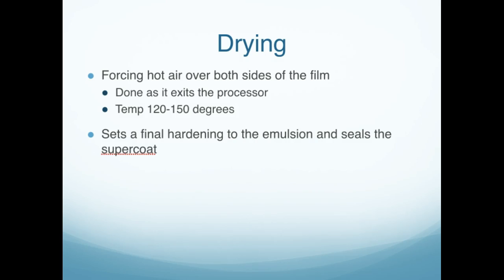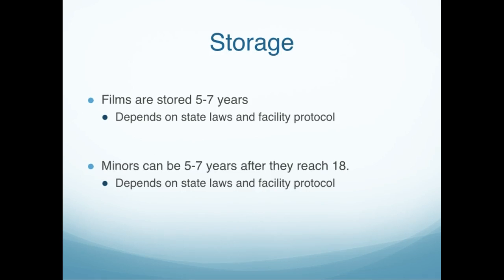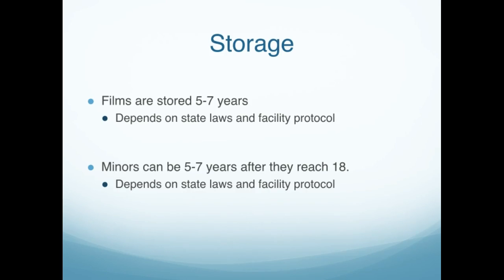The drying phase involves forcing hot air over both sides of the film as it exits the processor. The temperature is 120 to 150 degrees to dry it fairly quickly. This sets a final hardening to the emulsion and seals the supercoat. Films are stored in the film library for five to seven years. Minors who had films taken before age 18 — the hospital would hold those films until the minor reached 18, and then still hold them for five to seven years after that date.